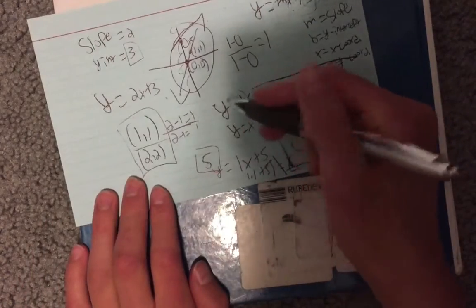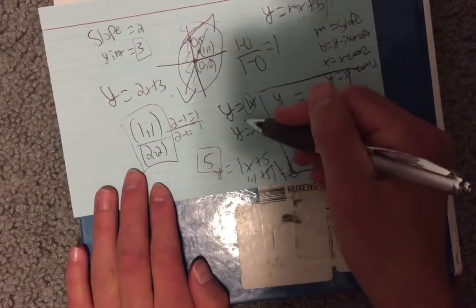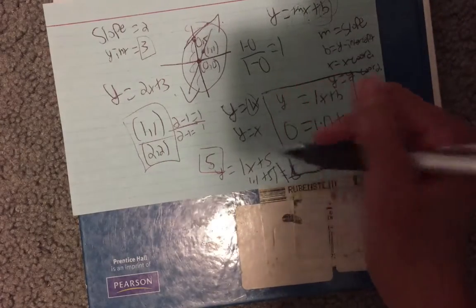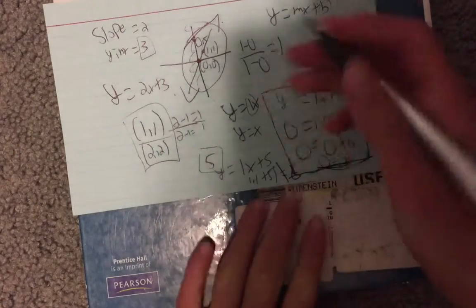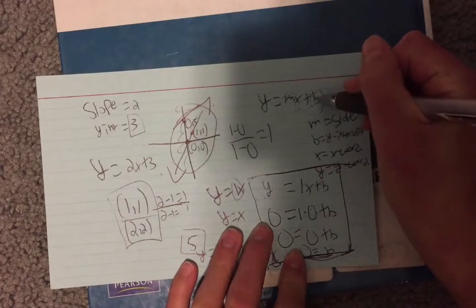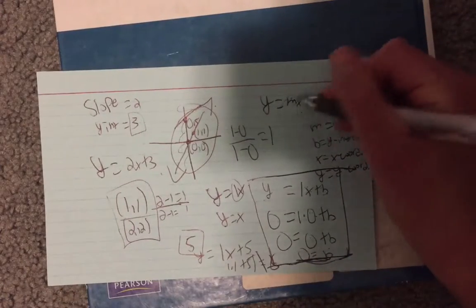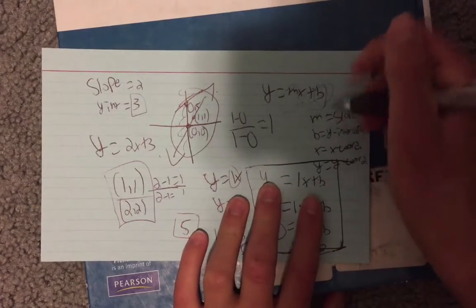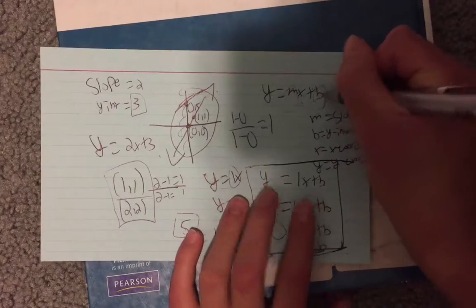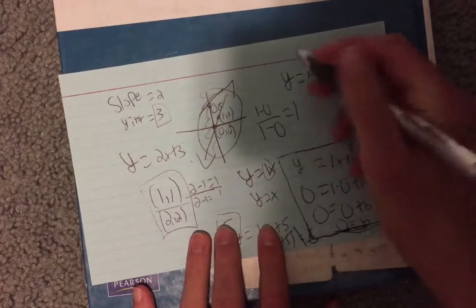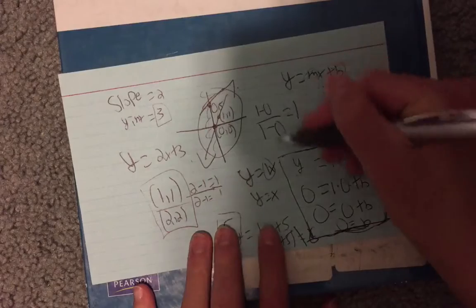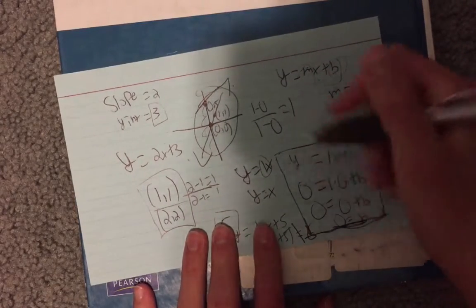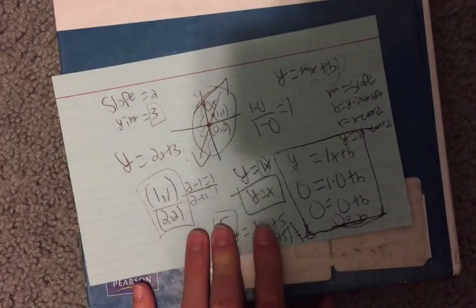So you would write your equation as y equals 1x, or it's implied if you don't put the 1, so you could just do y equals x. And same thing, you always need to have one of these in the equation. So you always need to have y, m, x, plus b. So if you don't put anything for b, it's implied that it's 0. We already said that it's implied that m is a 1. You have a y, you have an x, and the b is 0. So that's what your equation would look like.